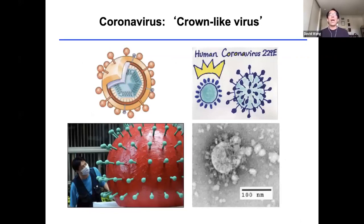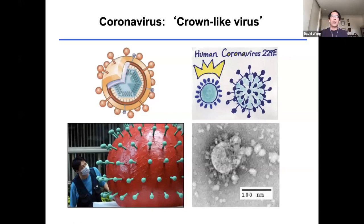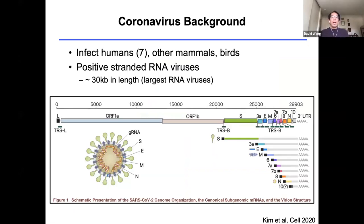Now let's talk about coronaviruses. The name coronavirus stands for crown-like virus, stemming from the crown-like projections from the viral particles that can be visualized by electron microscopy. This lower right panel is actually the first electron micrograph image taken by the CDC during the SARS coronavirus 1 outbreak in 2003 — you can see a sphere with projections coming out — along with various artistic renditions of the coronavirus family.